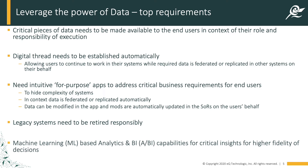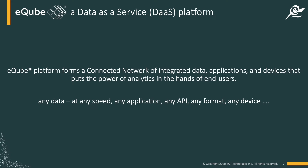These requirements we see everywhere — many customers talk about them. That's exactly what our eCube platform does. eCube is a data-as-a-service platform. It essentially creates a data fabric with a connected network of integrated data, applications, and devices, and puts the power of analytics in the hands of end users. eCube is able to connect to any data coming from any application, any format, any API at any speed, and is able to put this data fabric together.